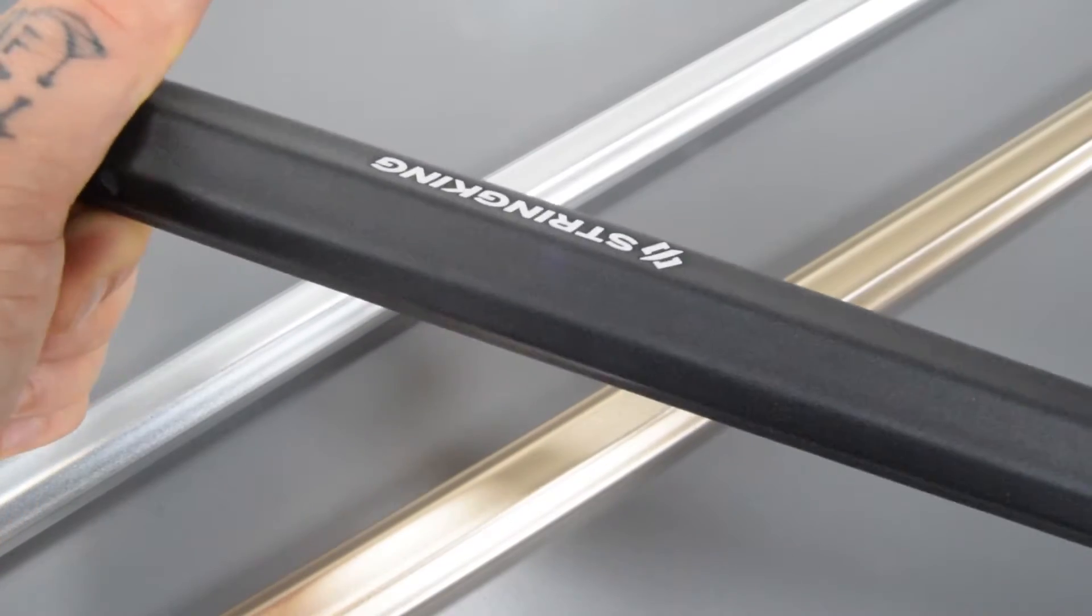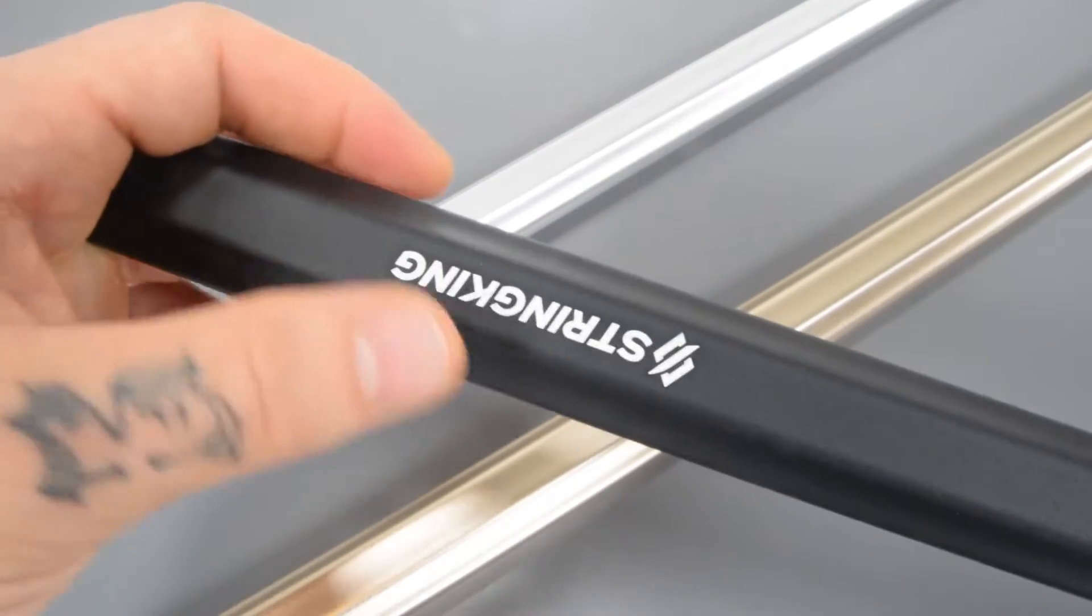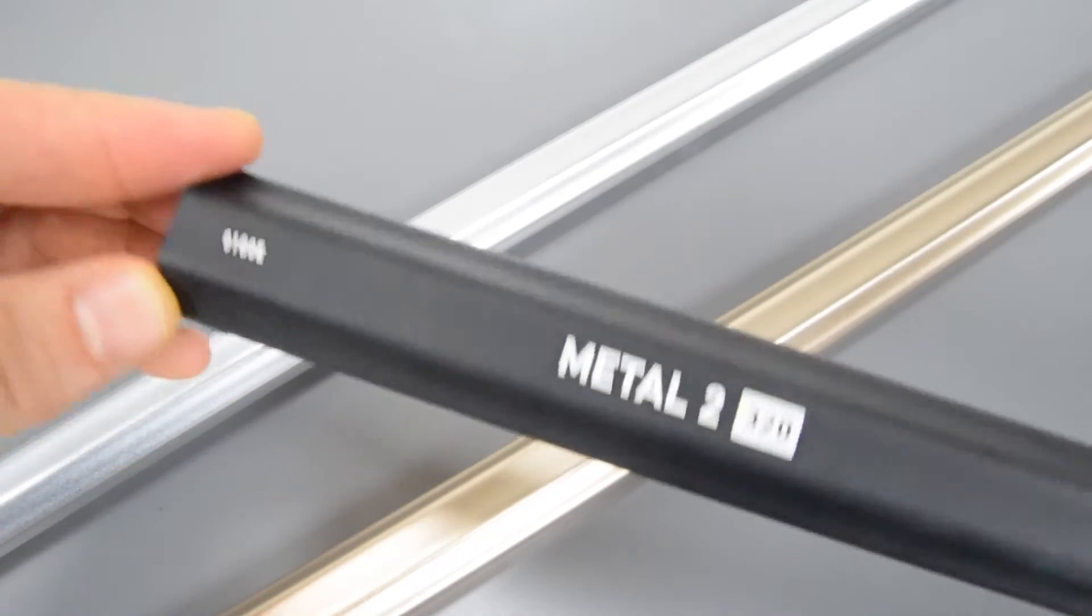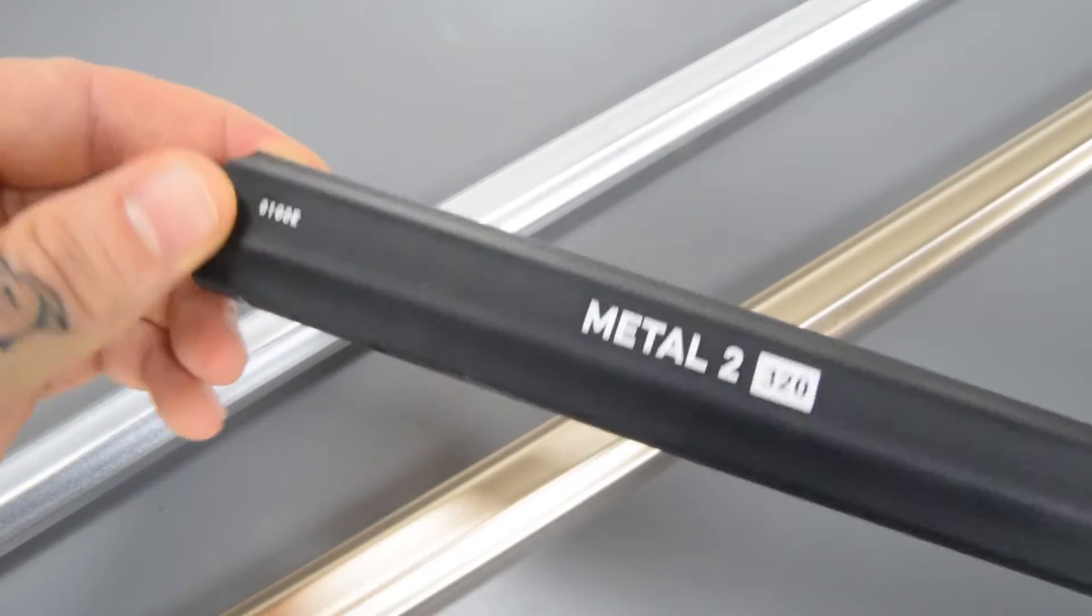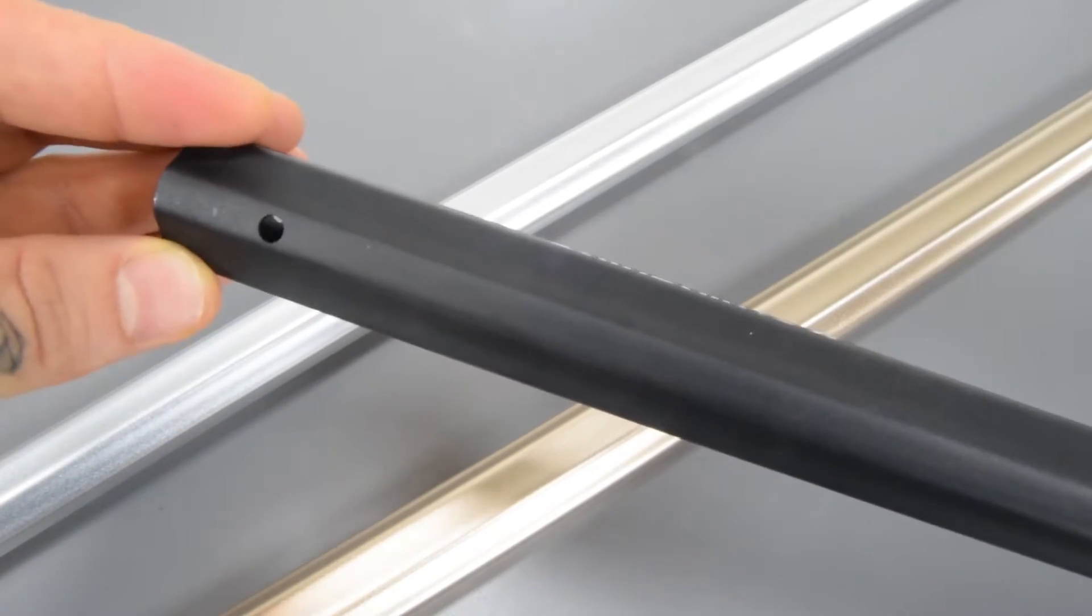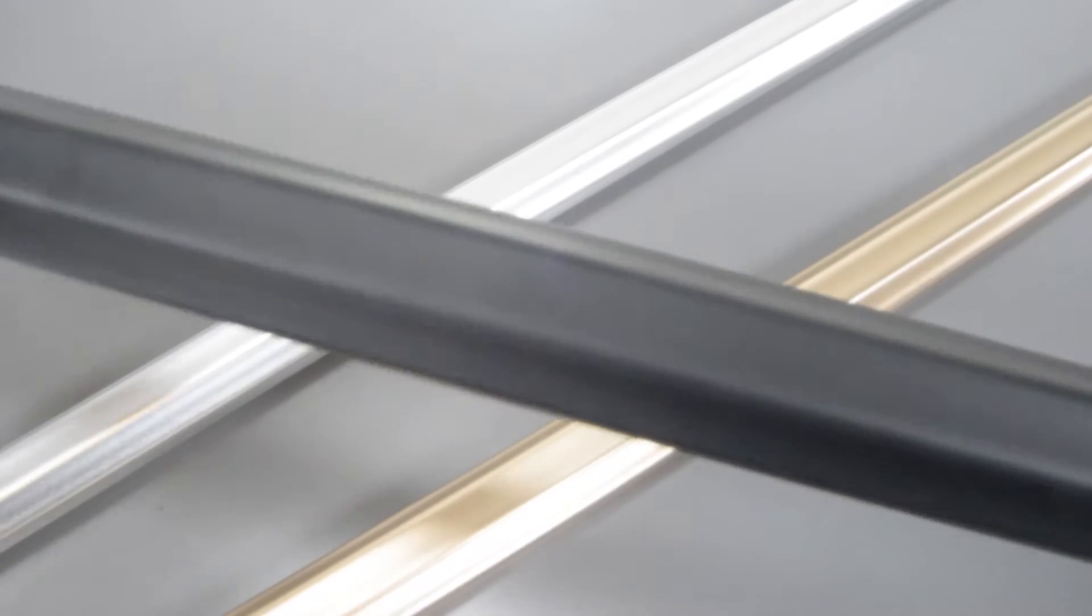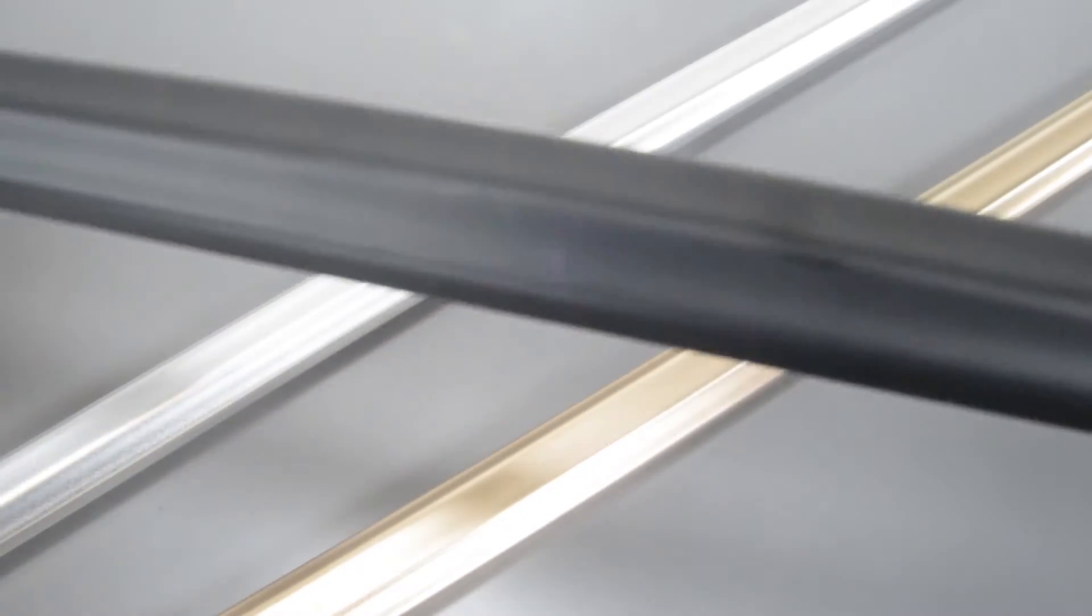And then on the other side you get the big StringKing logo and those right there on the head end of the shaft, that's all the graphics on the entire shaft. The rest of the length of the shaft, I'll pull it through this way, it is all solid black or solid silver or solid nickel.